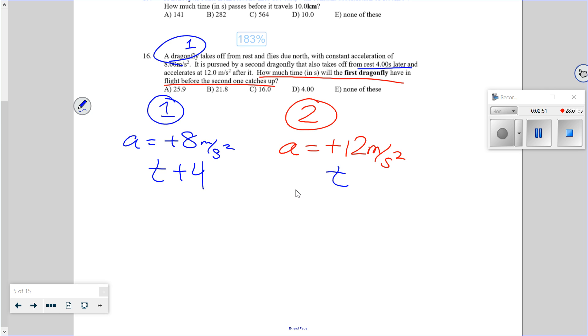But you do need to keep track of what you're calculating. So if I say, if I give this one t plus four, then I'm actually calculating how much time this guy had. Is that what it's asking for? No. It's asking me to calculate how much time dragonfly number one has in the air. So I actually want this to be time. And dragonfly 2 started later, so it has t minus four. It's four seconds behind the other one. Just for logic's sake, I would do that.